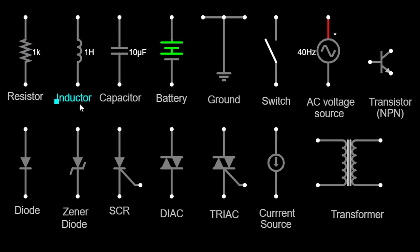Next, we have the inductor. Its symbol resembles a coil or a spring. Inductors store energy in the form of a magnetic field when current flows through them. They resist changes in current, making them useful in applications such as filters, transformers, and energy storage devices.